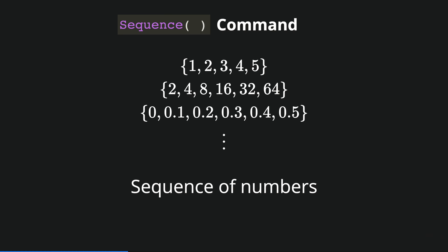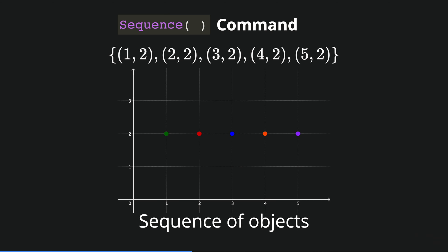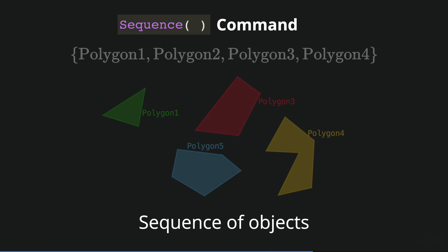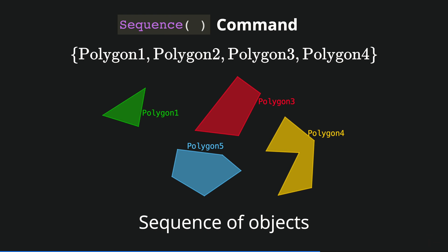Not only that, we can also manipulate those lists and do operations with them like subtraction, addition, multiplication, and division. We can also create sequences of objects like points, functions, or polygons for example.